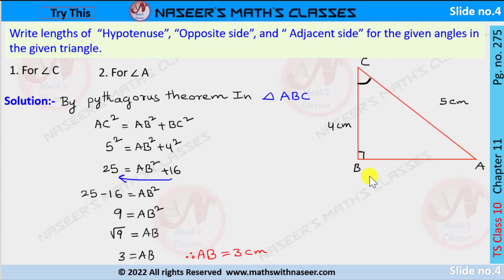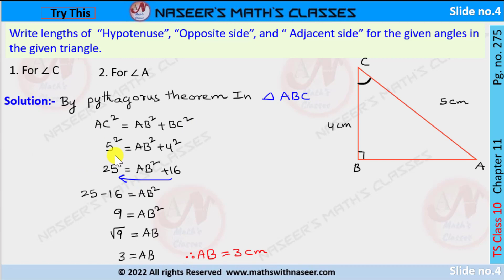ABC is the triangle in which angle B equals 90 degrees, BC is equal to 4 centimeters, and AC is equal to 5 centimeters. In triangle ABC, by Pythagoras' theorem we can write AC squared is equal to AB squared plus BC squared. Substituting the values: 5 squared is equal to AB squared plus 4 squared.